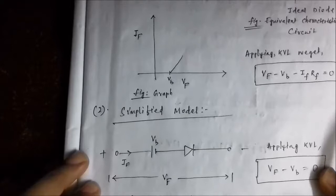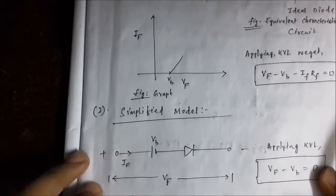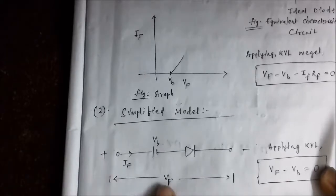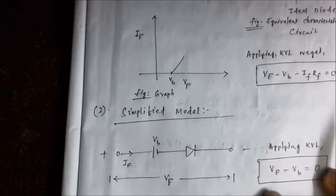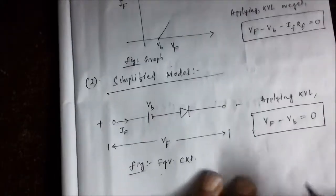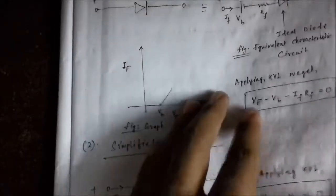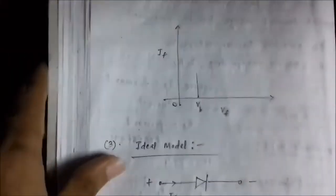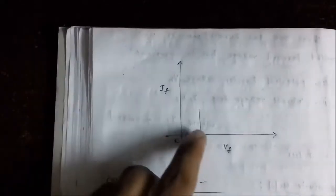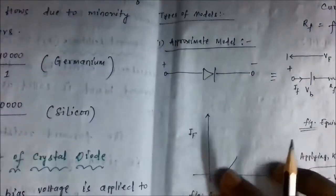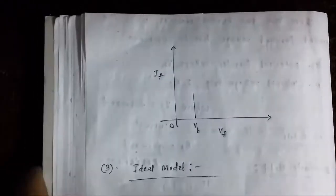The next is the simplified model, where there is no internal resistance of the diode involved — just the built-in potential or potential barrier. Applying KVL: V_F minus V_B equals zero, meaning the forward voltage at which current conduction takes place equals the built-in potential. The voltage-current graph shows a sharp increase in current at V_B. As there is no IR drop, it does not follow an ohmic relationship — there is a sharp increase at V_B rather than a gradual curve.